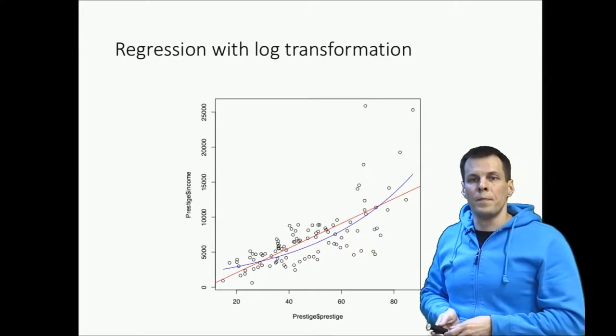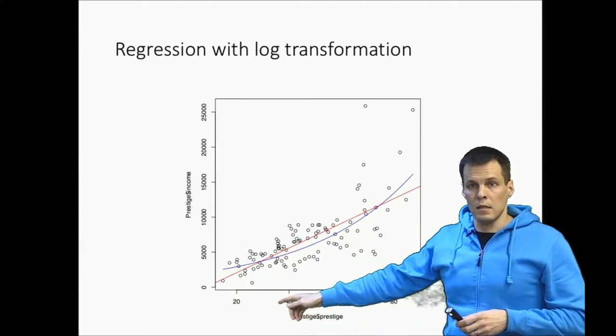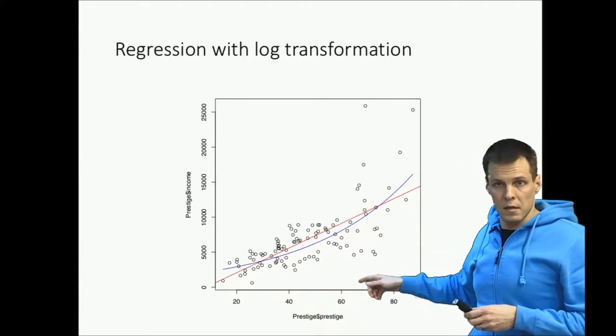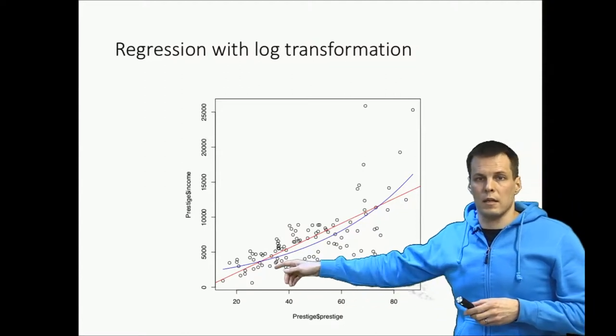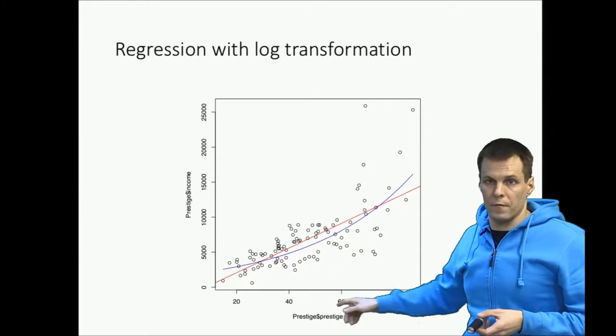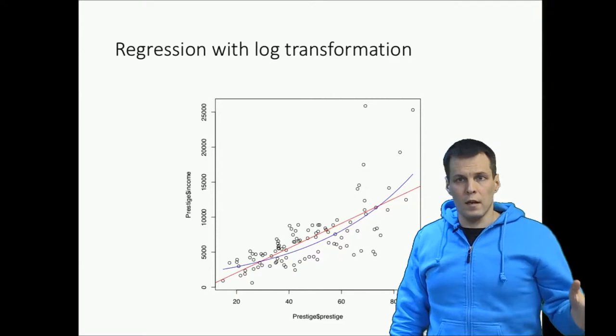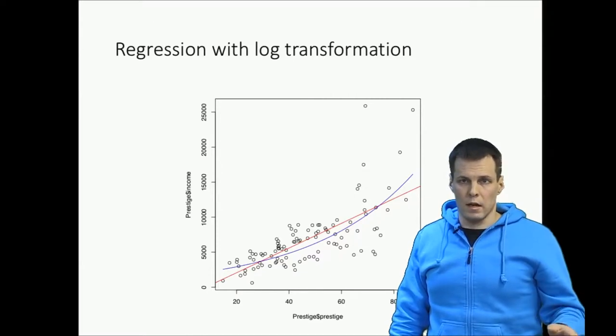So instead of saying that our income increases as a constant function of Prestige, we say that income increases as a relative function to the current level of income as a function of Prestige.